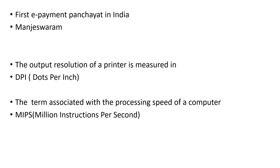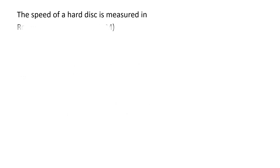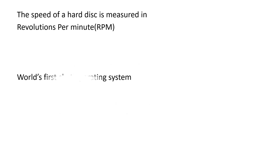The speed of a hard disk is measured in RPM — Revolutions Per Minute.